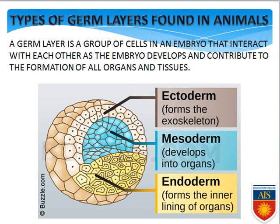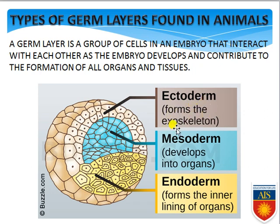Next, types of germ layers found in animals. A germ layer is a group of cells in an embryo that interact and contribute to the formation of all organs and tissues. The outer germ layer is ectoderm — it forms exoskeleton, epidermis or skin, brain, nervous system, and sense organs. The middle germ layer is mesoderm — it produces muscle tissue, blood tissue, bones, cartilage, and the outer wall of internal organs.